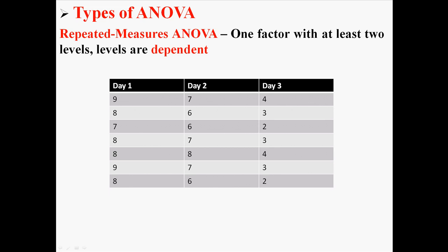There's also the repeated measures ANOVA. This is one factor with at least two levels, but the levels are dependent. Like now you can see the data has changed, we're measuring the same people, day one, day two, and day three. It looks almost exactly the same, but now we're dealing with dependent data.